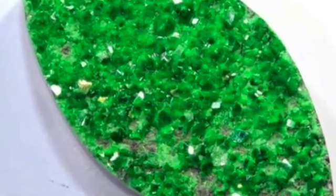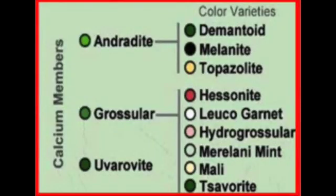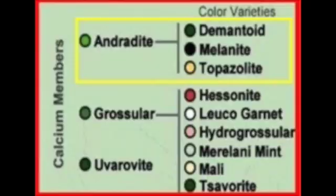This week's lesson is about uvarovite garnet. It is the last of the three calcium members of the garnet family of gemstones. If you take a look at the original chart I showed you in episode 48, which was Garnet 101, you're going to see the three calcium members. The last of them on the bottom is uvarovite; the other two are andradite and grossular garnet. In the andradite garnet family, you can see there are three color varieties, which I've indicated with a yellow box.